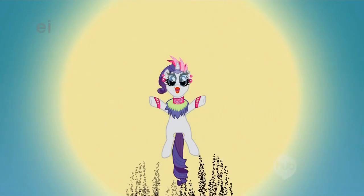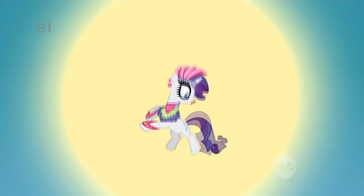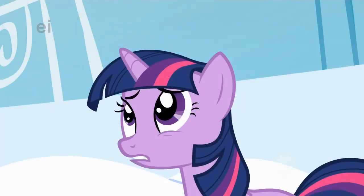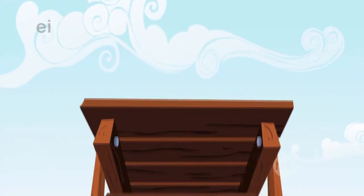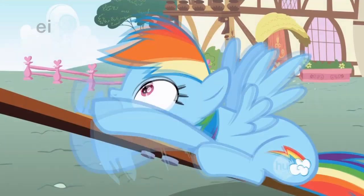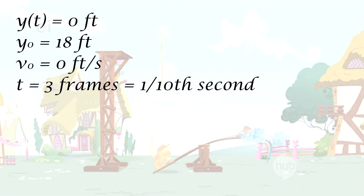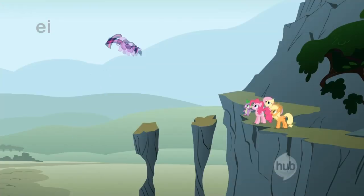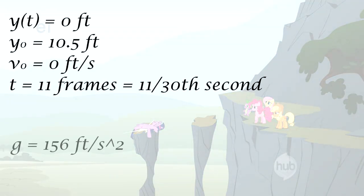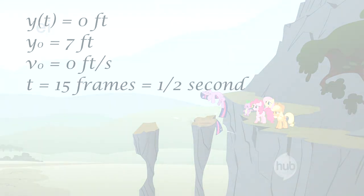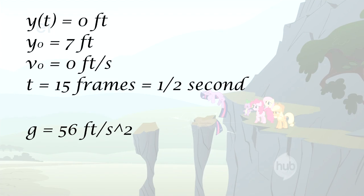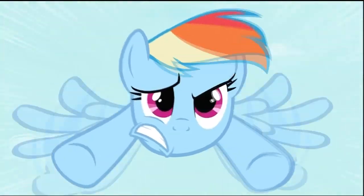Well, calculating G from an example in Equestria will actually yield very different values of G depending on which situation you choose. For example, using this scene in Apple Buck Season yields a G of about 36,000 feet per second squared. Using this scene from Feeling Pinkie Keen yields a G of 156. Using that same scene but the second bounce yields a G of about 56. Using this scene from the Mysterious Mare Do Well yields a G of only 2.24.